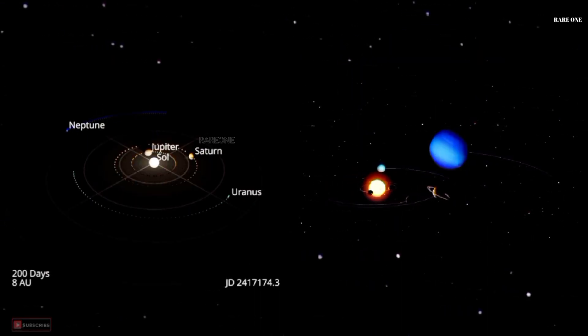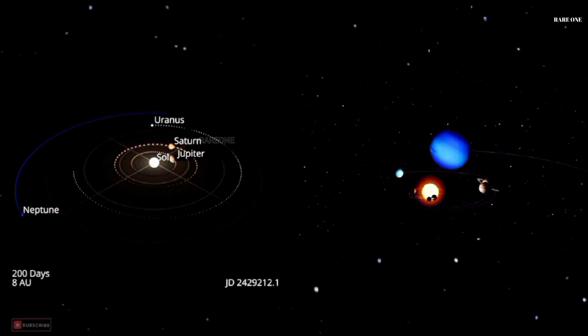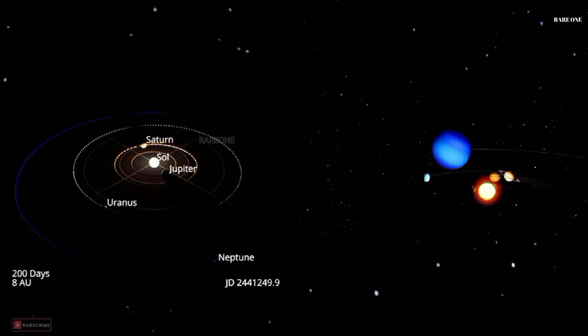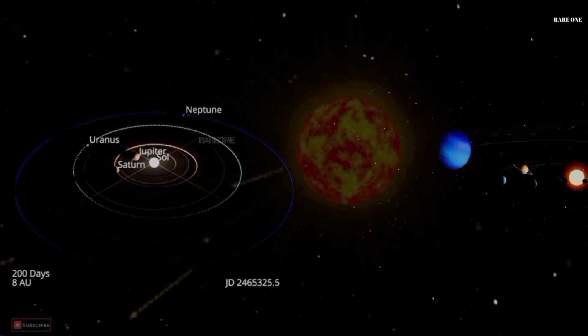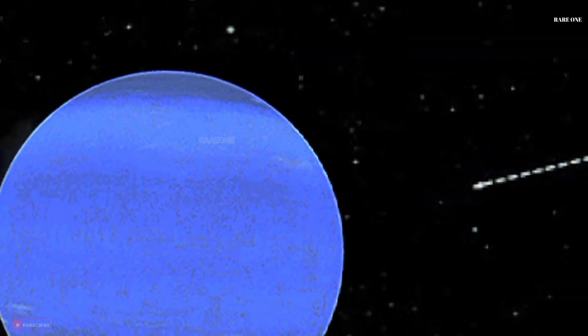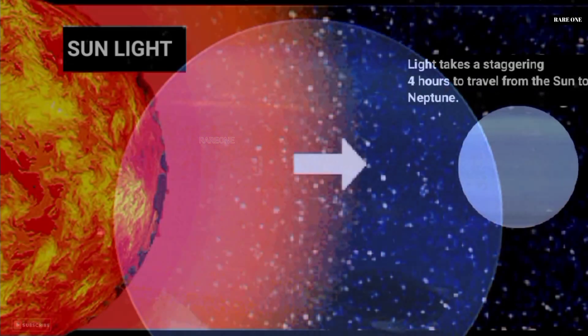This massive planet orbits the Sun at an average distance of 4.5 billion kilometers, or 30 astronomical units, making it the farthest known planet from our star. Light takes a staggering four hours to travel from the Sun to Neptune.